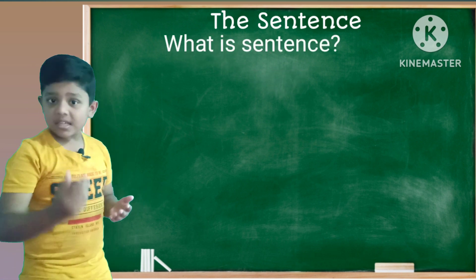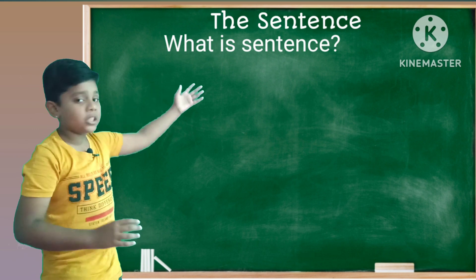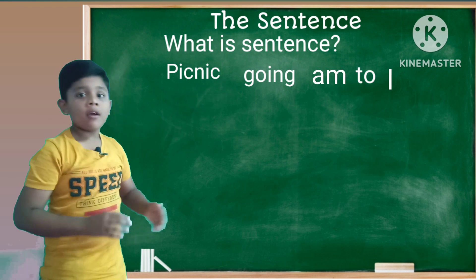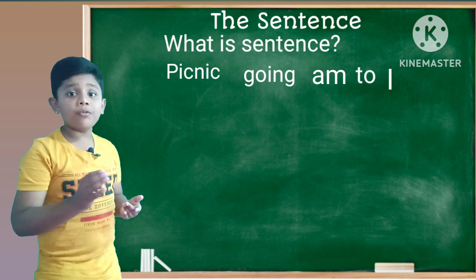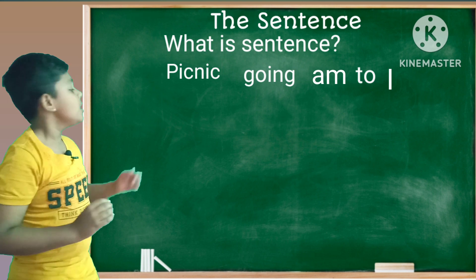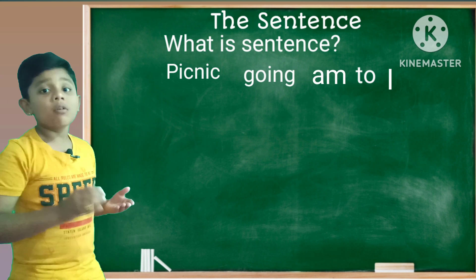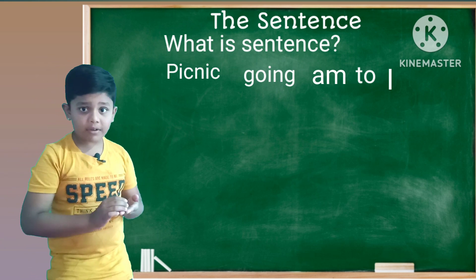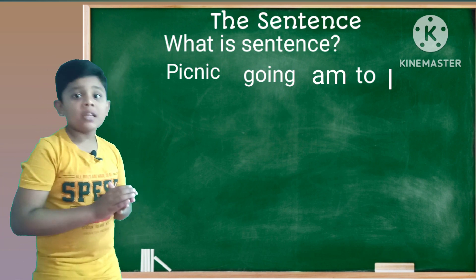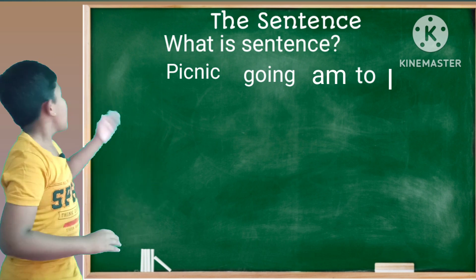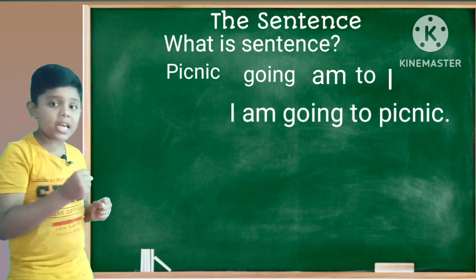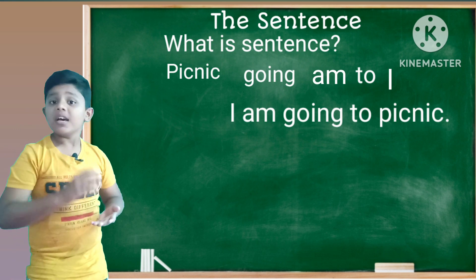Now let's see what is a sentence. Look at these words: picnic, going, am, to, are. These words are also meaningful words and they are also made up of some letters and carry meanings. When these words are arranged in a particular way — that is, as per grammar rules — we get complete sense. That is, when these words are arranged as 'I am going to picnic,' here we get complete sense. This arrangement is called a sentence.